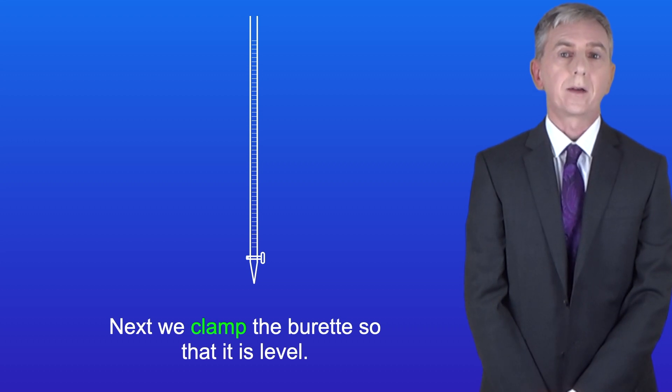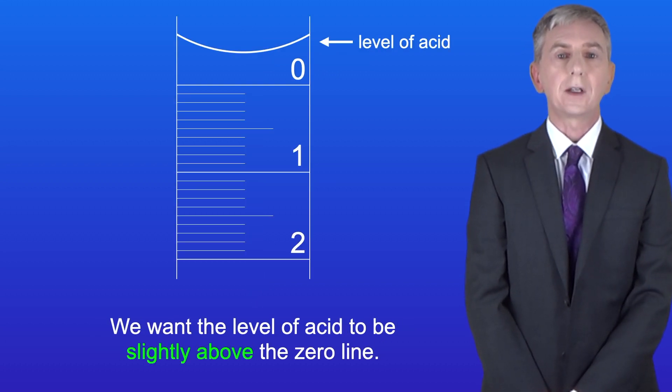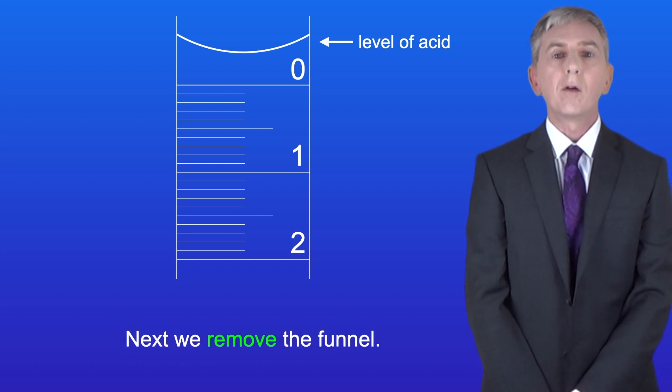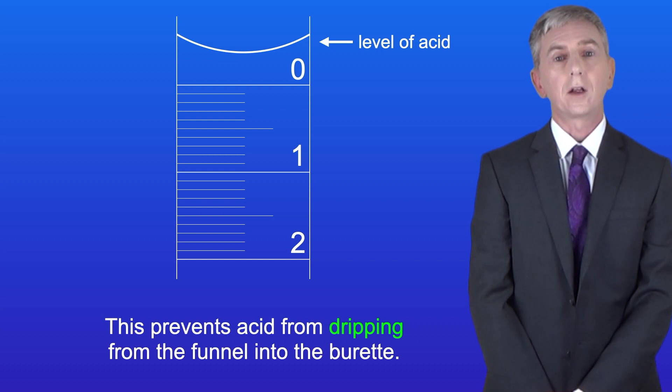Next we clamp the burette so that it's level. At this stage we now use a funnel and slowly fill the burette with acid. We want the level of acid to be slightly above the zero line. Next we remove the funnel. This prevents acid from dripping from the funnel into the burette.